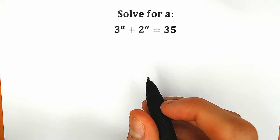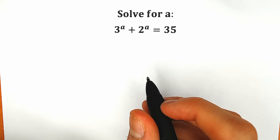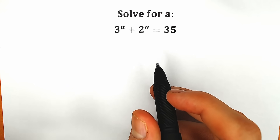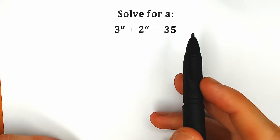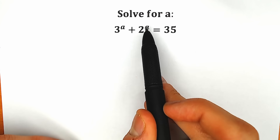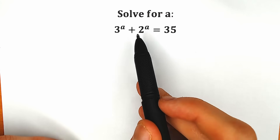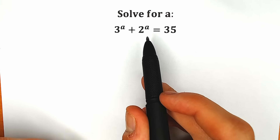Hello everyone! Happy to see you here! Welcome back to my channel Higher Mathematics! Today we have a very interesting question from entrance examinations: 3 to the a plus 2 to the a equals 35, and we need to find a.